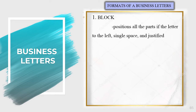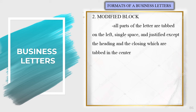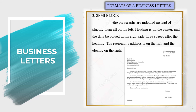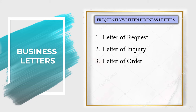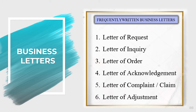Formats of a business letter: first is block — position all parts of the letter to the left, single spaced, and justified. Modified block — all parts of the letter are on the left, single spaced, and justified except the heading and closing which are tabbed to the center. Semi block — paragraphs are indented instead of being placed all on the left; heading is centered, date placed to the right, recipient's address on the left, and closing on the right. Frequently written business letters include: letter of request, letter of inquiry, letter of order, letter of acknowledgement, letter of complaint or claim, and letter of adjustment.